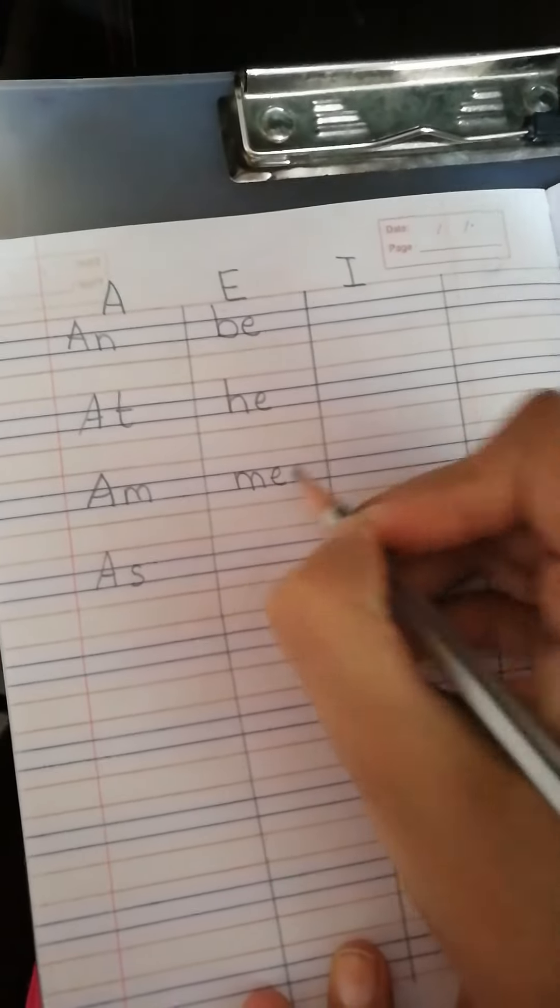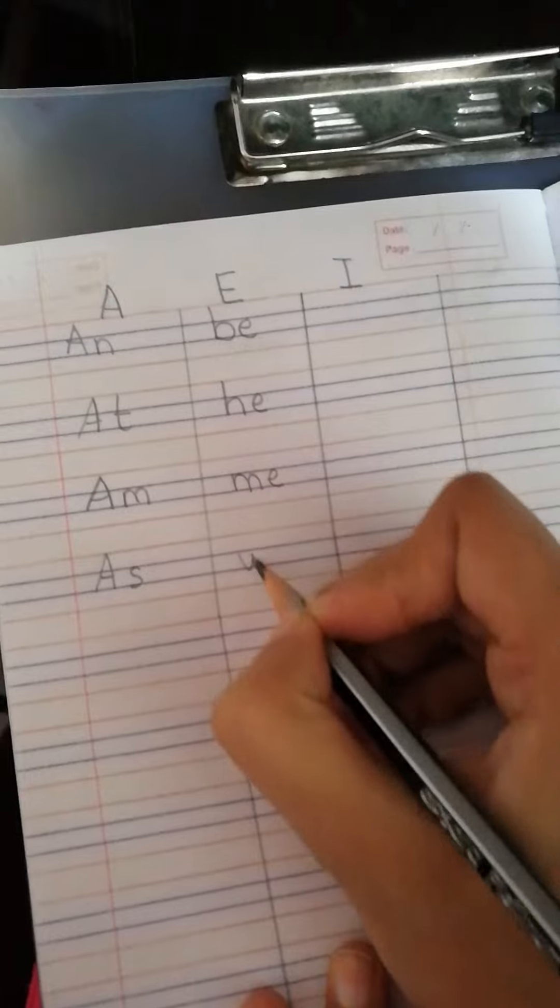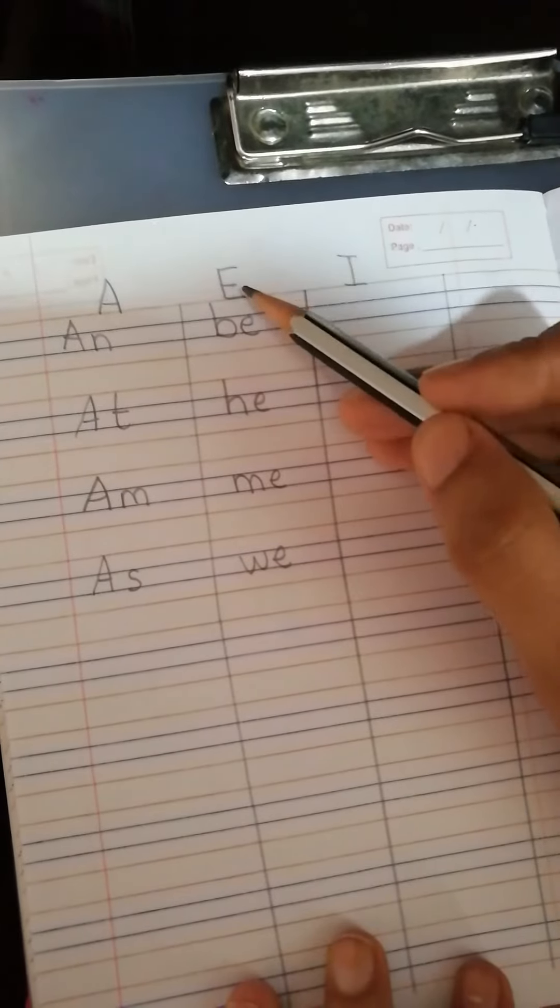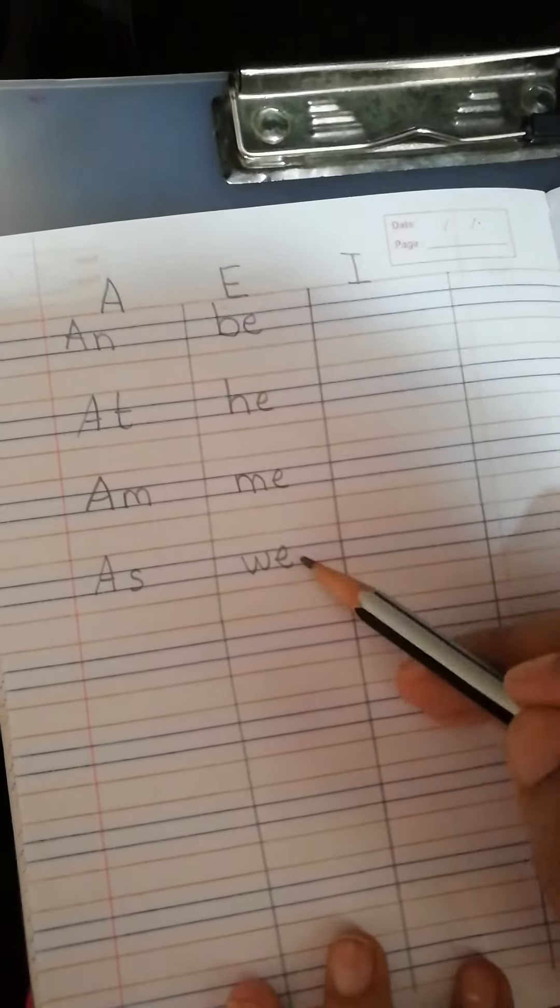M, E, me. And W, E, we. Very good. These are the four two-letter words that have got the vowel E in it.